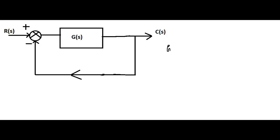We have G(S) = 2 / (S² + S + 2). This is the transfer function of the system G(S). It is in a closed loop system with unity feedback. The input R(S) is a unit step function.